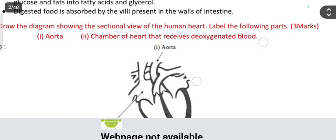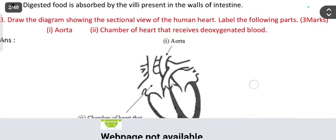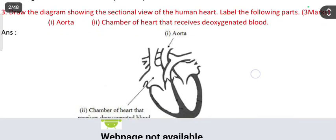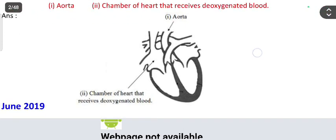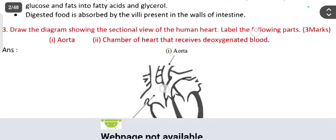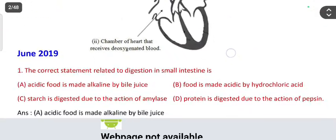Draw a diagram showing the sectional view of the human heart and label the following parts, or the chamber of the heart that receives deoxygenated blood. If you draw and label the parts correctly, you will get three marks for that. Next, in June 2019 paper: